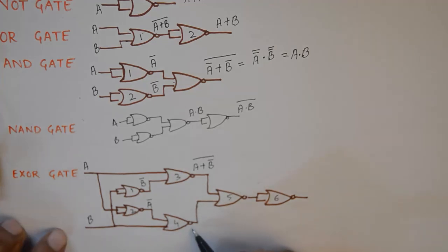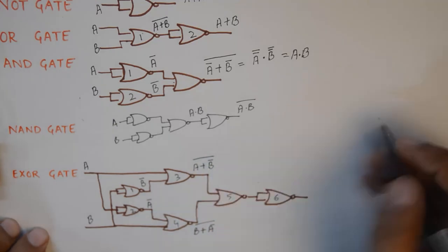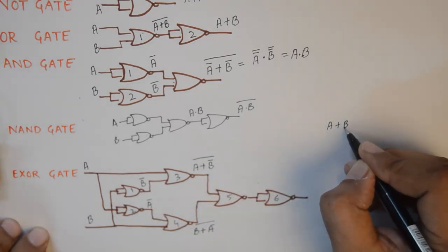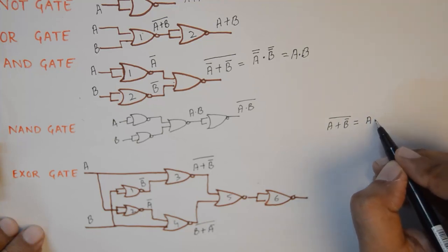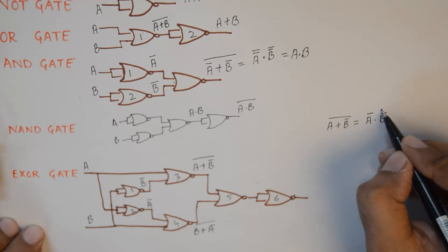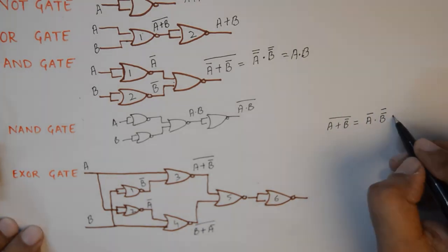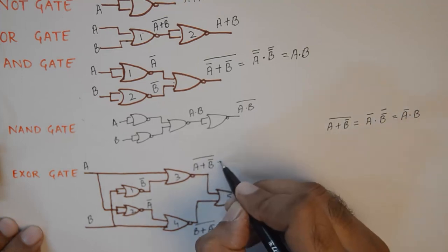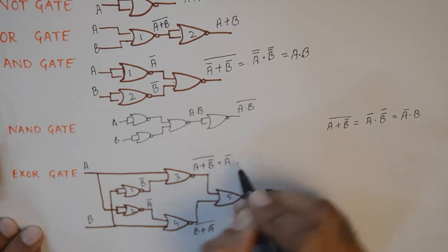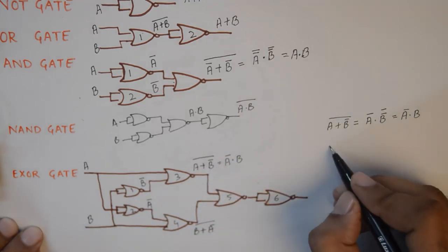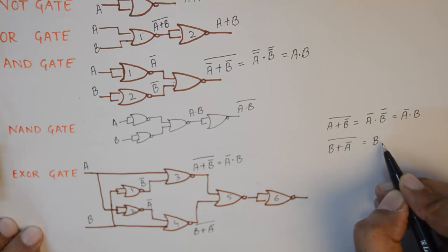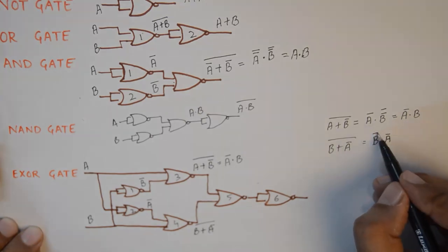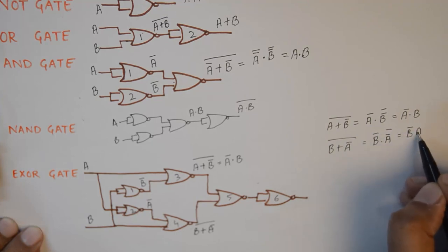The output of gate number three will be (A + B̅) bar, and the output of gate number four will be (B + A̅) bar. Applying De Morgan's theorem to (A + B̅) bar gives individual terms multiplied with bars on individual terms, yielding A̅ · B. Similarly, applying De Morgan's theorem to (B + A̅) bar gives B̅ · A, or A · B̅.